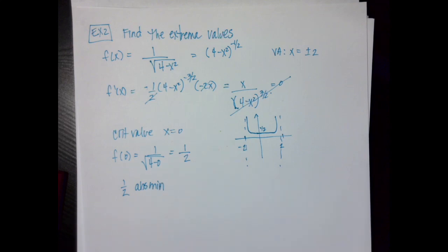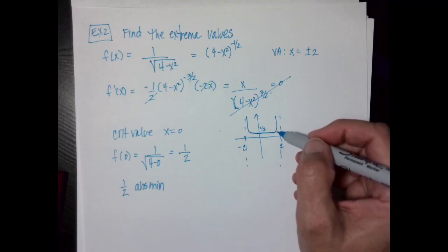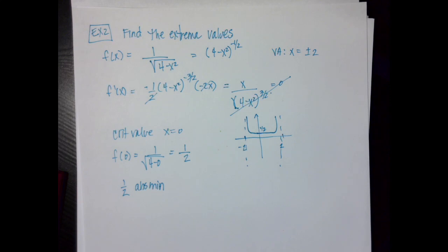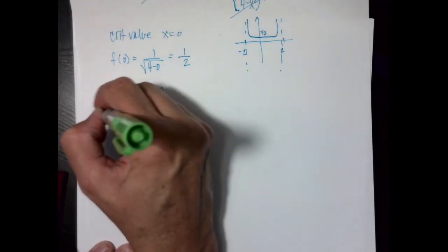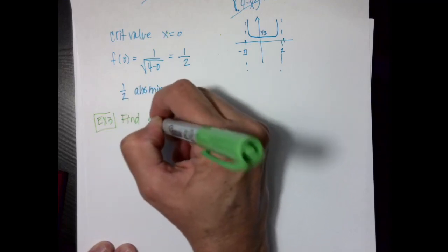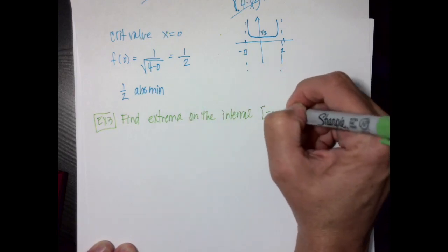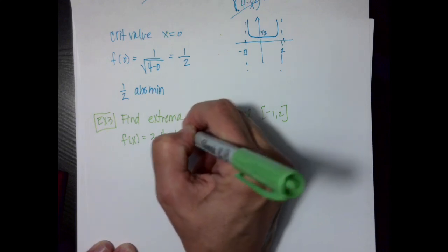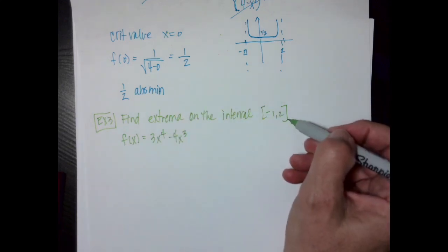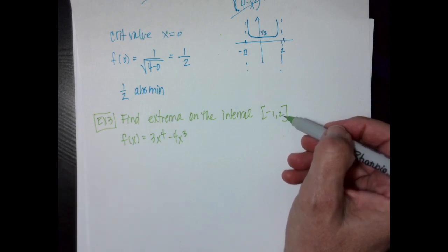Sometimes we have to use a combination of calculus and our calculators. For Example 3, we find the extrema on the closed interval [-1, 2] of f(x) = 3x⁴ − 4x³. Because it's a closed interval, remember by the Extreme Value Theorem we need to check the endpoints. The first thing we do is take the derivative and find critical points.